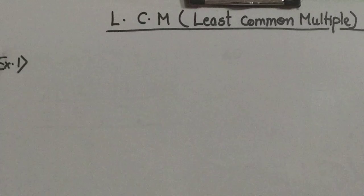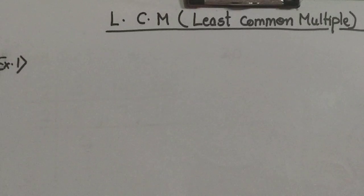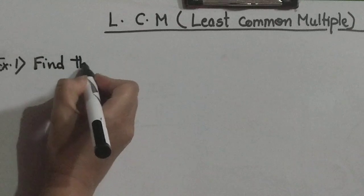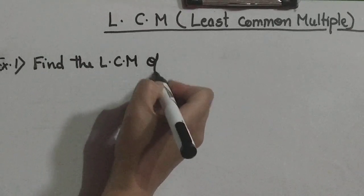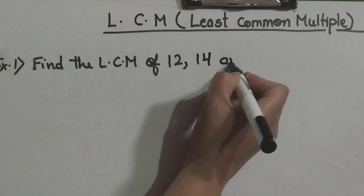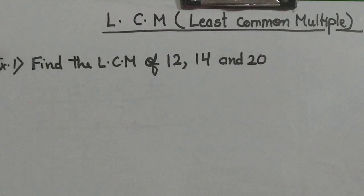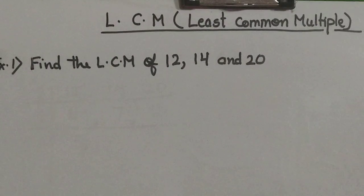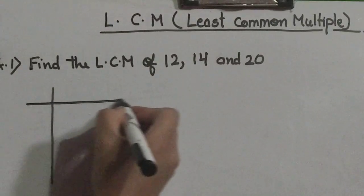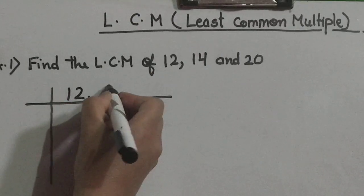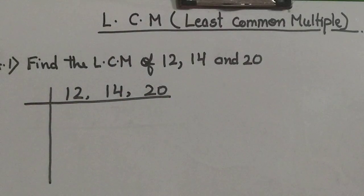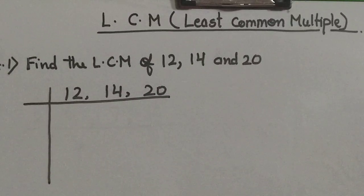Now we will see by example how to find out the LCM. First example: find the LCM of 12, 14, and 20. The first step: write the given numbers in a horizontal line separating them by commas — so we write 12, 14, 20 on the horizontal line. The second step: divide them by the suitable smallest prime number which exactly divides at least one of the given numbers.